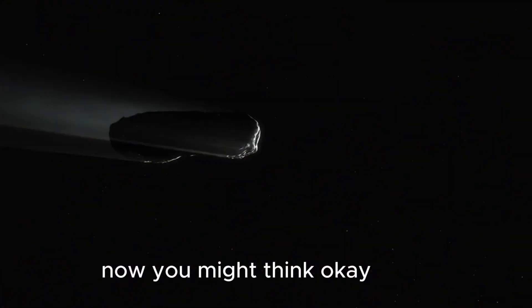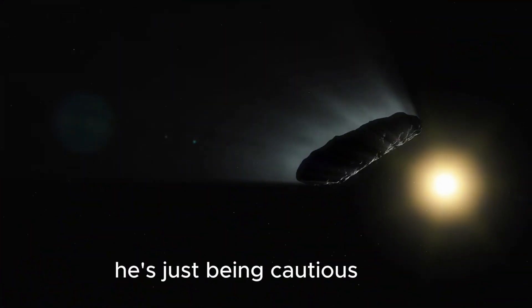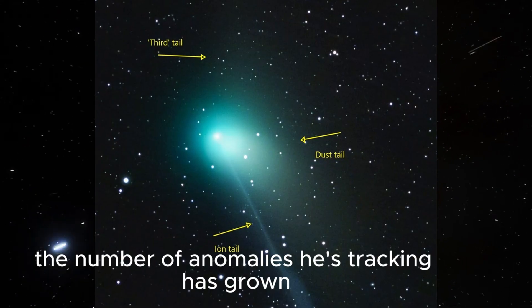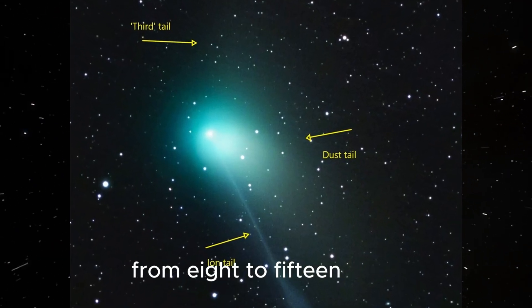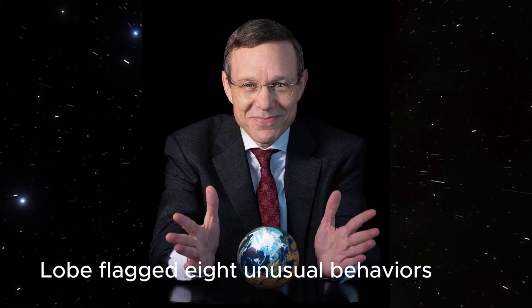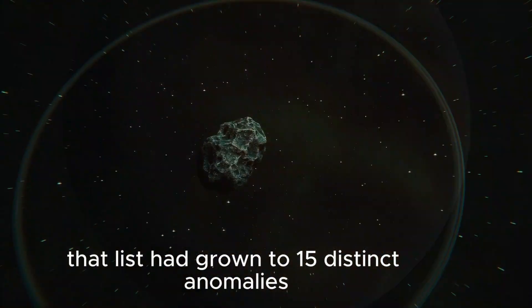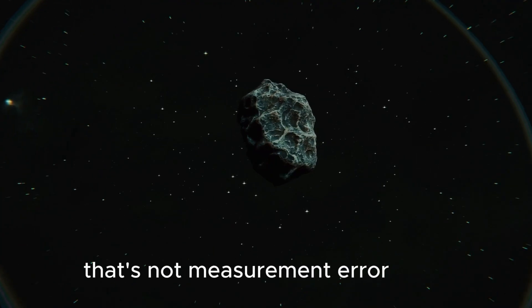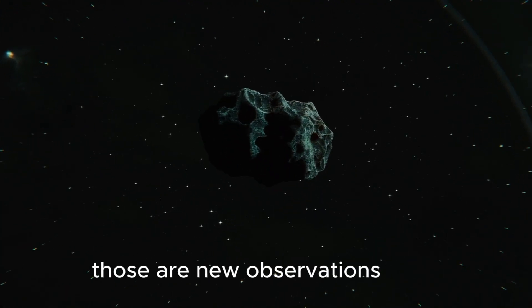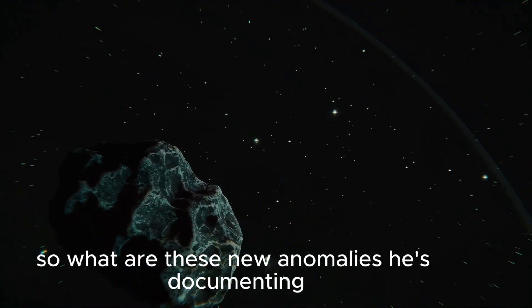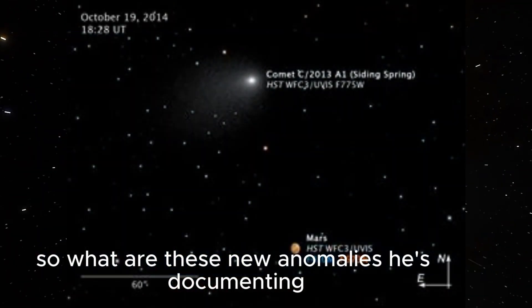Now you might think, okay, he's just being cautious. But here's where it gets interesting. The number of anomalies he's tracking has grown from 8 to 15. Back on October 29th, Loeb flagged 8 unusual behaviors. By late December, that list had grown to 15 distinct anomalies. That's not measurement error. Those are new observations revealing new patterns that don't fit natural comet models. So what are these new anomalies he's documenting?